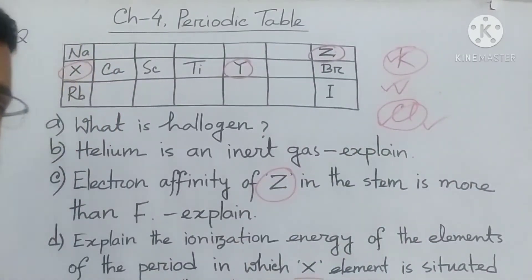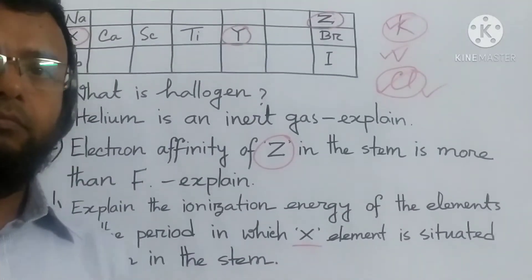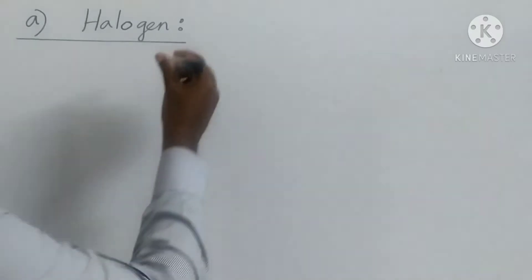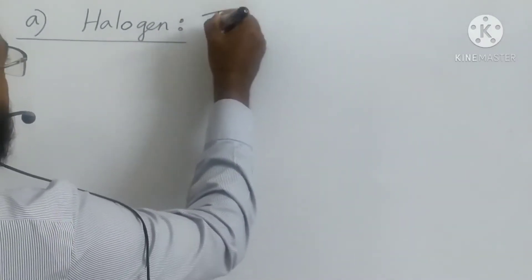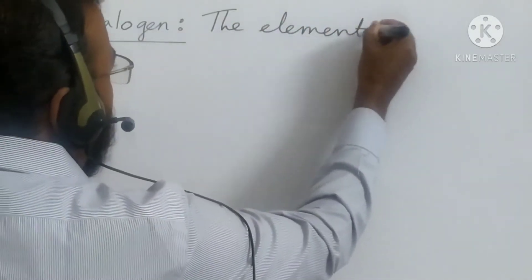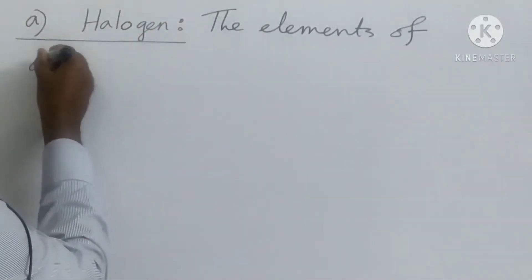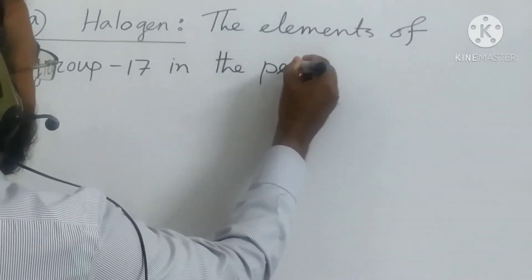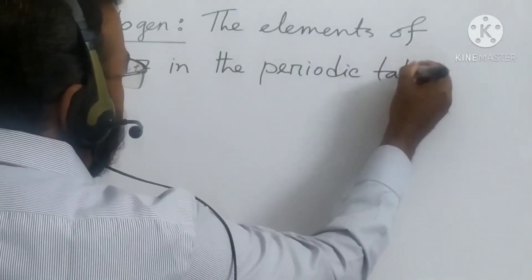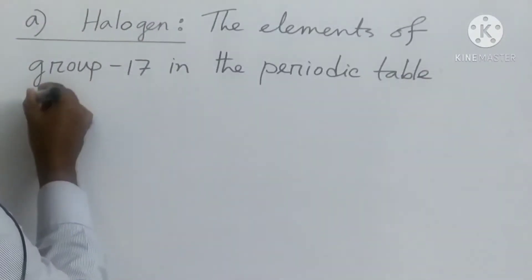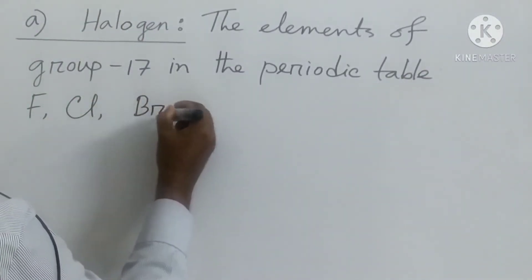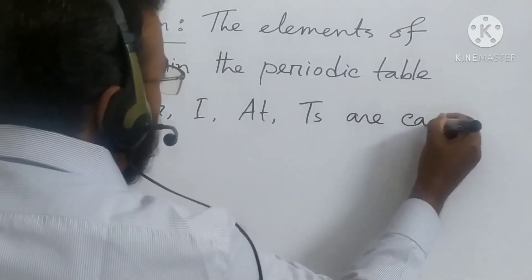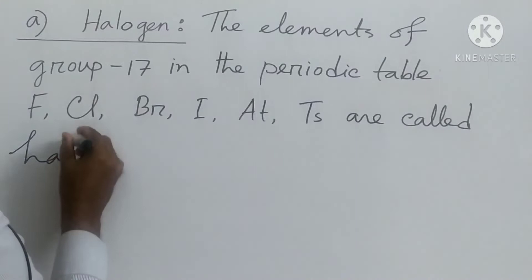Now we have to write the answers one by one. The first question: what is halogen? The elements of group 17 in the periodic table — that is fluorine, chlorine, bromine, iodine, astatine, and tennessine — are called halogen.